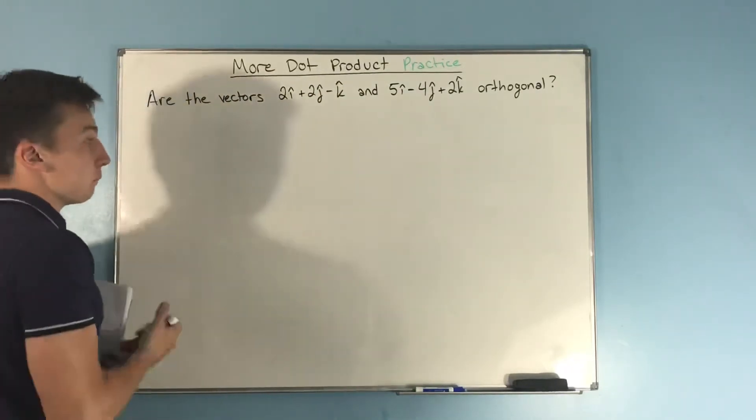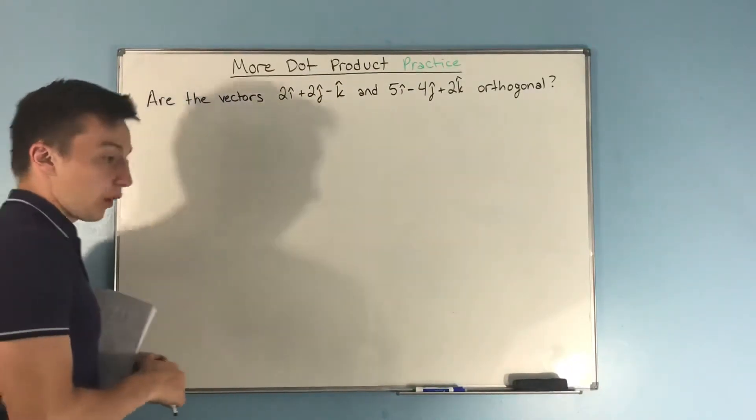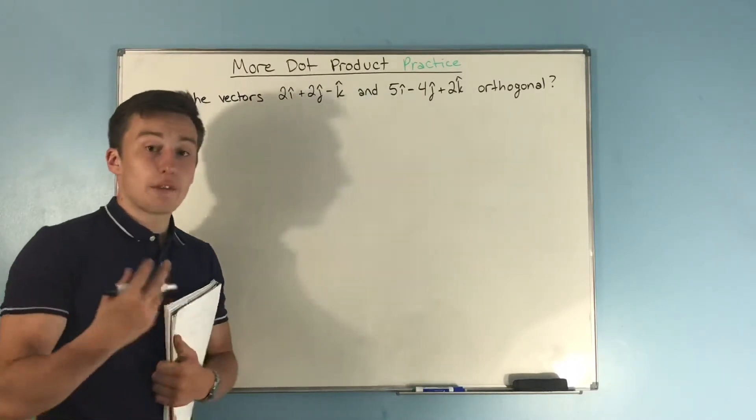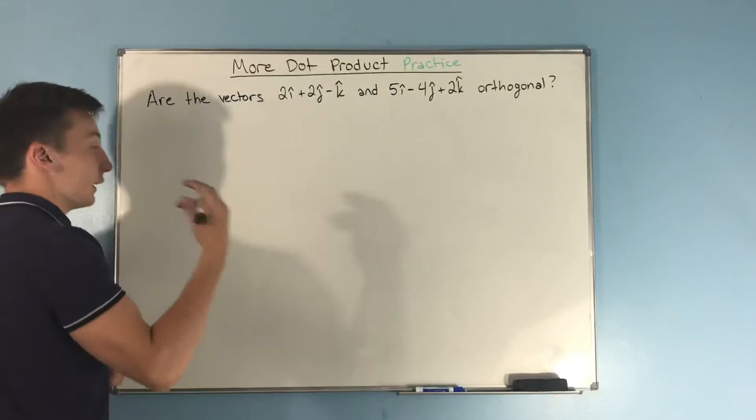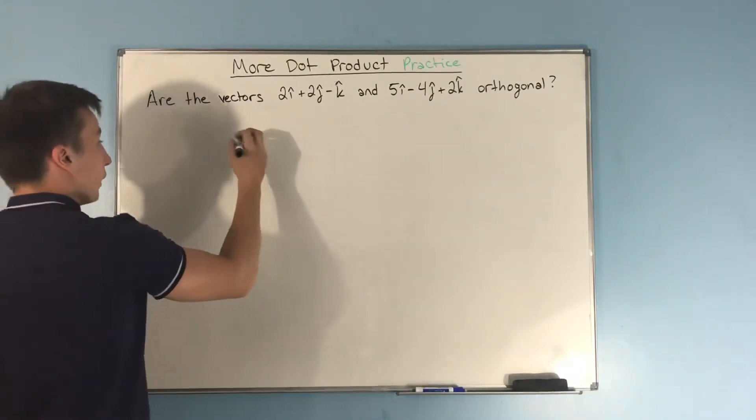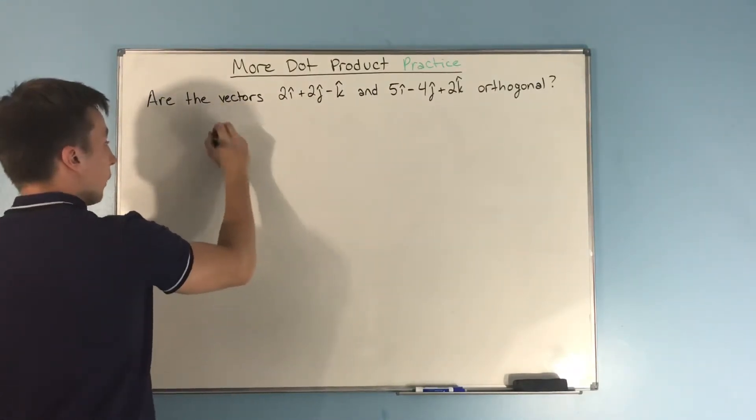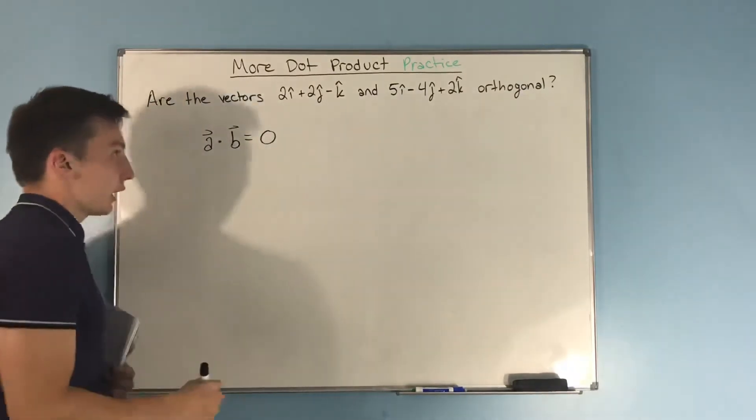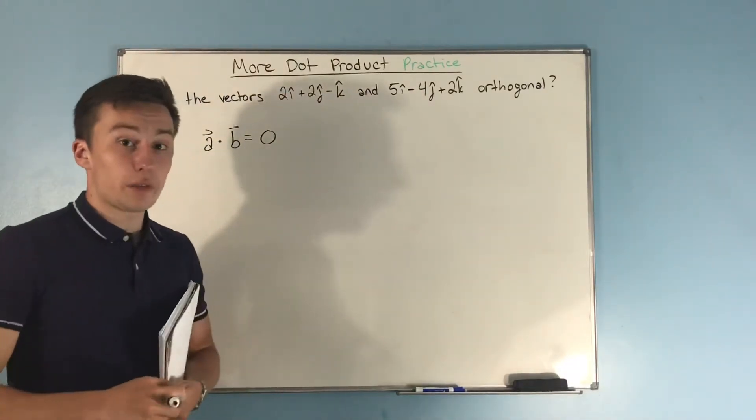How do we do that? Well, if the vectors are orthogonal, for our purposes, that means that they are perpendicular. If they're perpendicular, that means that their dot product is zero. So we need to find out if a dot b is equal to zero. That will tell us if the two vectors are orthogonal.